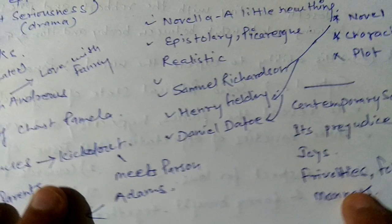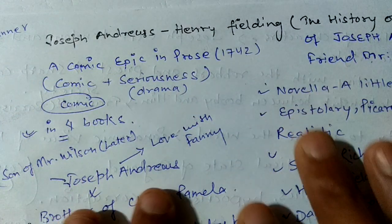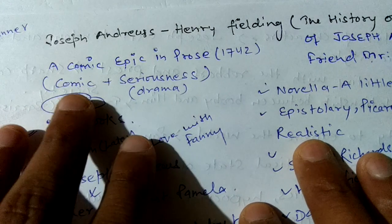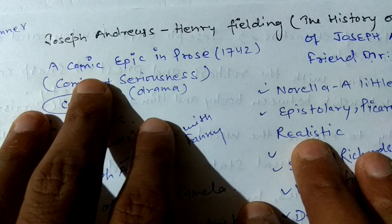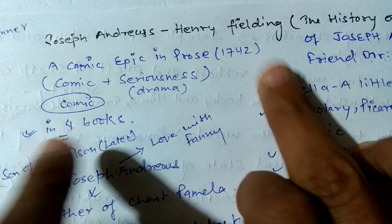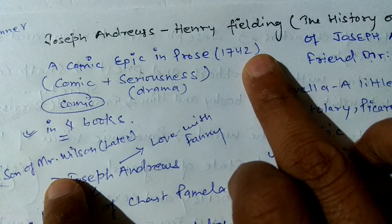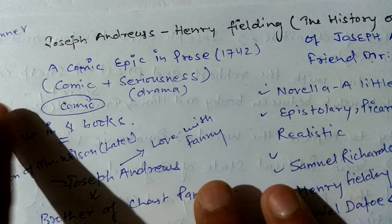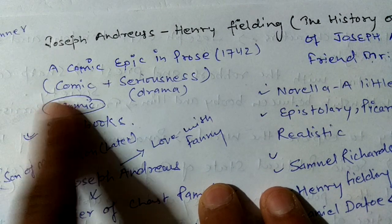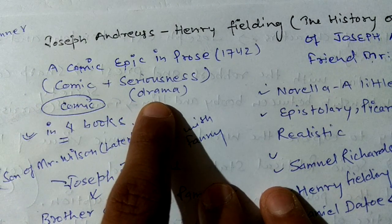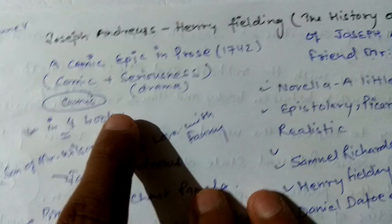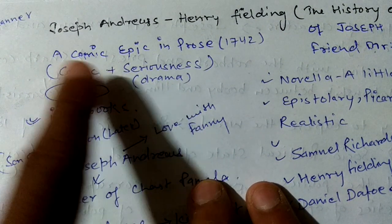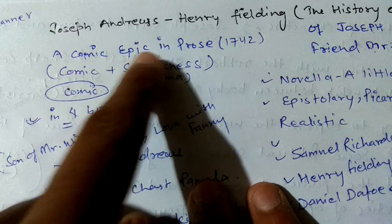Henry Fielding himself called this work a comic epic in prose. This work was published in 1742. The nature of the work is both comic and serious — you can call it drama as well. Comic plus drama — that is why he called it a comic epic in prose.